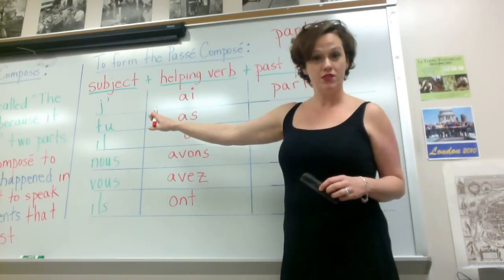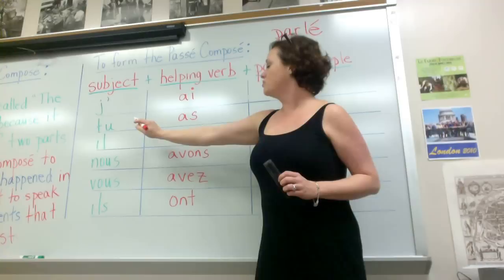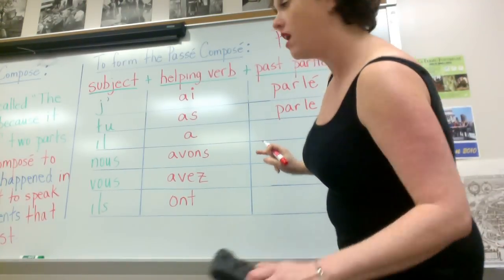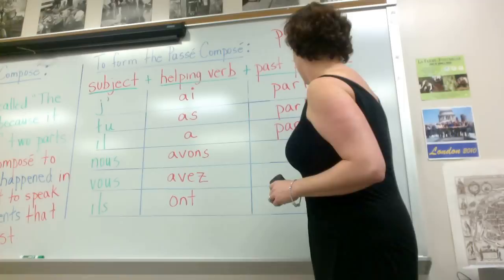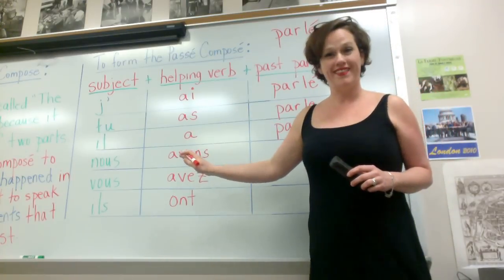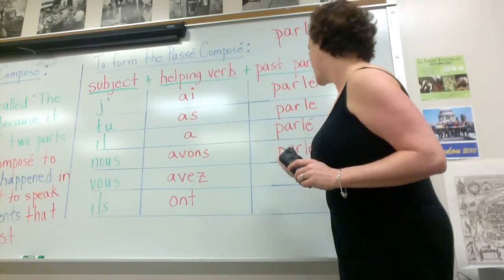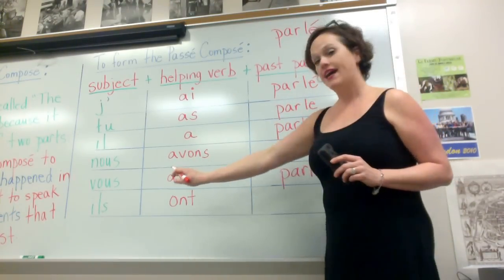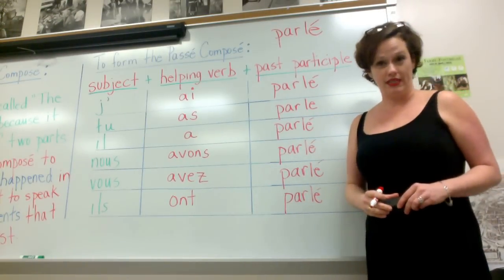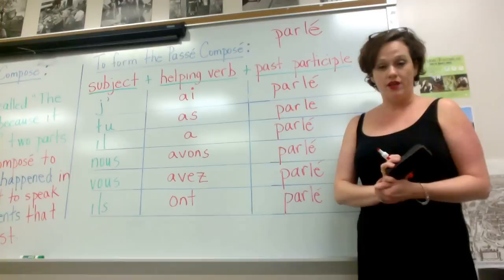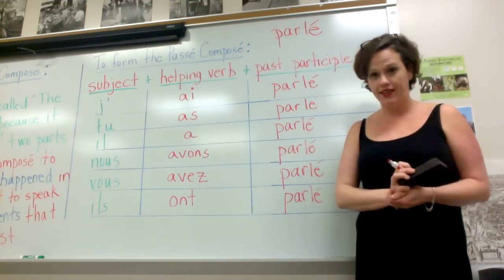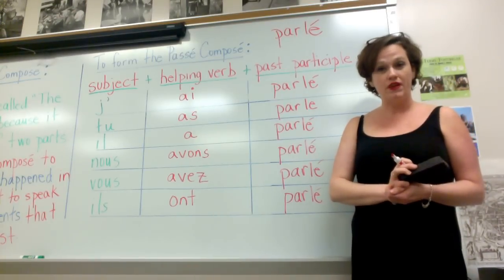So to say 'you spoke,' and remember this you is singular and it's informal, 'you spoke,' tu as parlé. He spoke, il a parlé. We spoke, nous avons parlé. You spoke, and this you is formal or maybe it's plural, vous avez parlé. And they spoke, ils ont parlé. So all of your regular ER verbs are going to work in the same way. I ate, j'ai mangé. We swam, nous avons nagé. They looked at, ils ont regardé. D'accord? All right, so that's your first group of regular verbs.